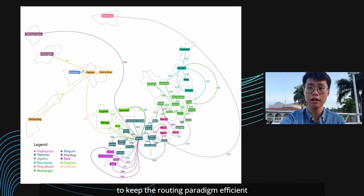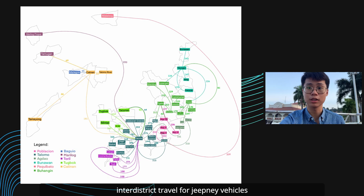In the routing paradigm, inter-district travel for jeepney vehicles was not permitted to control traffic flow, thus commuters must transfer jeepney vehicles once inter-district travel is necessary. This means that if implemented, commuters may experience jeepney transfers more frequently.